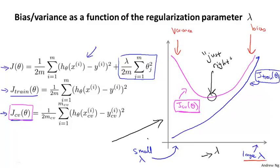By now you've seen bias and variance from a lot of different perspectives. What I'd like to do in the next video is take these insights and build on them to put together a diagnostic called learning curves, which is a tool I often use to try to diagnose if a learning algorithm may be suffering from a bias problem, a variance problem, or a little bit of both.